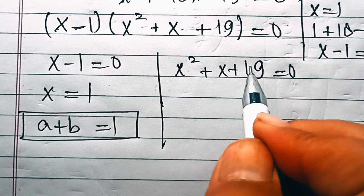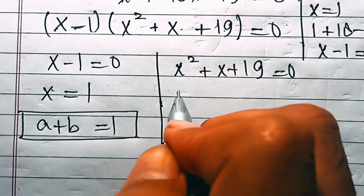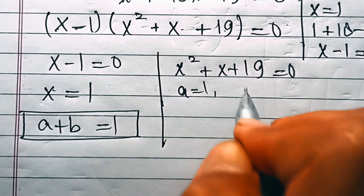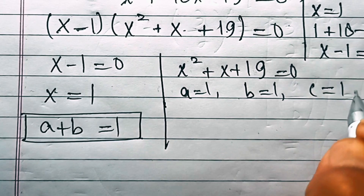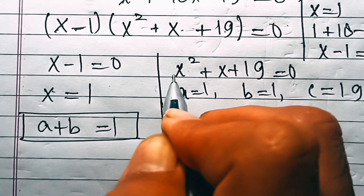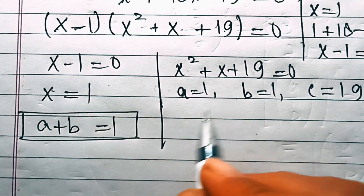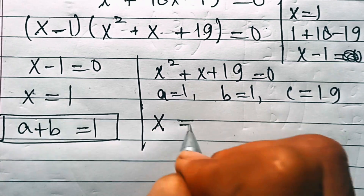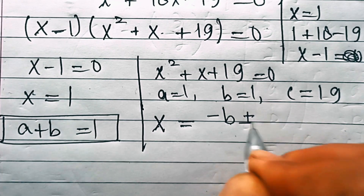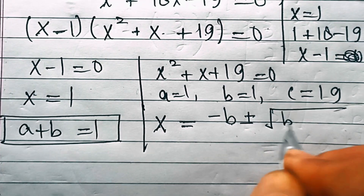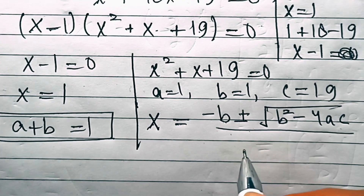From the quadratic x² + x + 19 equals 0, we solve using the quadratic formula. Here a equals 1, b equals 1, and c equals 19, where a is the coefficient of x², b is the coefficient of x, and c is the constant. By the quadratic formula, x equals negative b plus or minus the square root of (b² minus 4ac) over 2a.